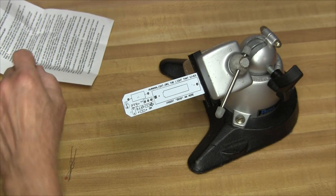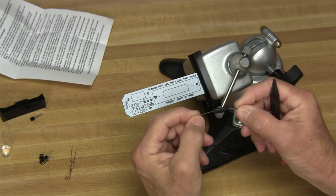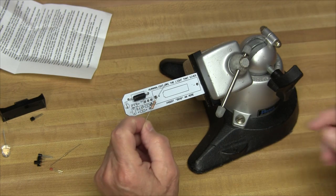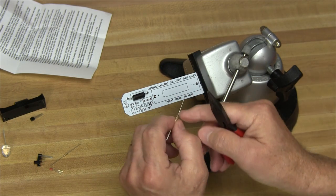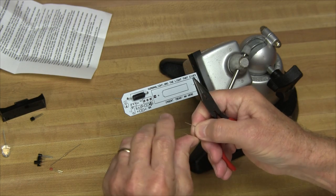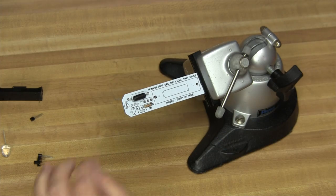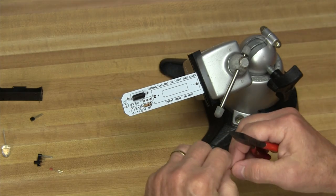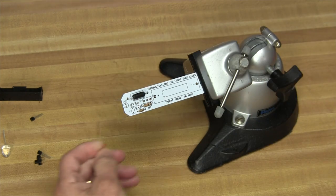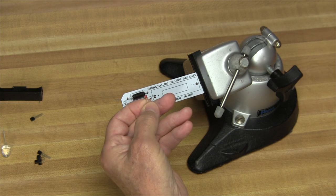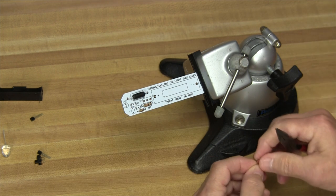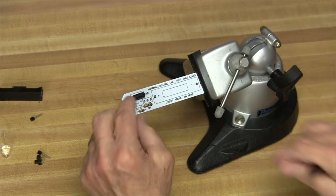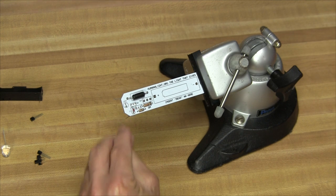They want us to install the inductor first. That's this deal here that looks like a capacitor with a piece of heat shrink over it. Then we take the larger of the two resistors, this is a 10K, it's resistor R1. Next, we take the smaller resistor, which is a 100K, and install it as R2. Next, we'll take the capacitor marked 471. This is the only capacitor in the kit, so we probably can't mess this up.